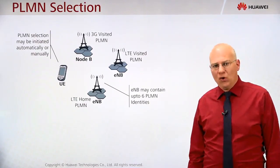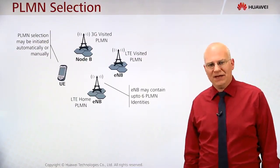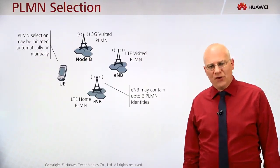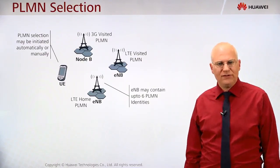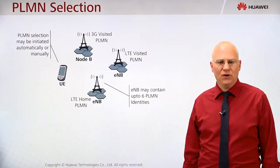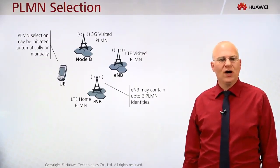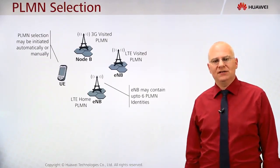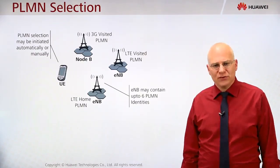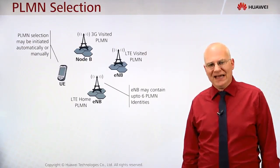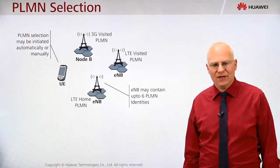If there is no home PLMN and no equivalent home PLMN, then first are selected PLMNs with high quality, so with an RSRP value above minus 110 dBm. If there are no high quality networks, then the user equipment selects PLMN according to the RSRP value.